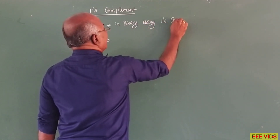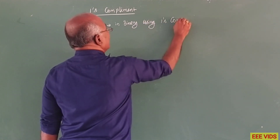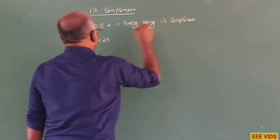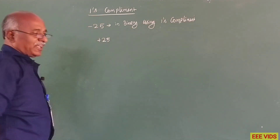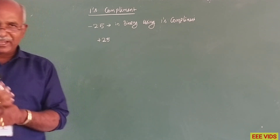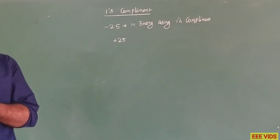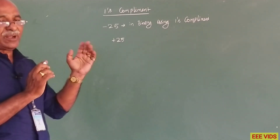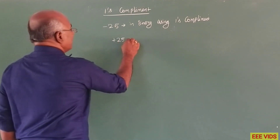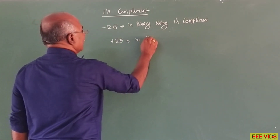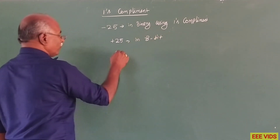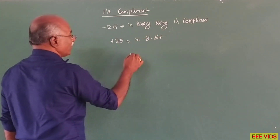1's complement is used in binary. So first, we need to write plus 25. We need to write a group of 8 bits — we need to write plus 25 in 8 bits.